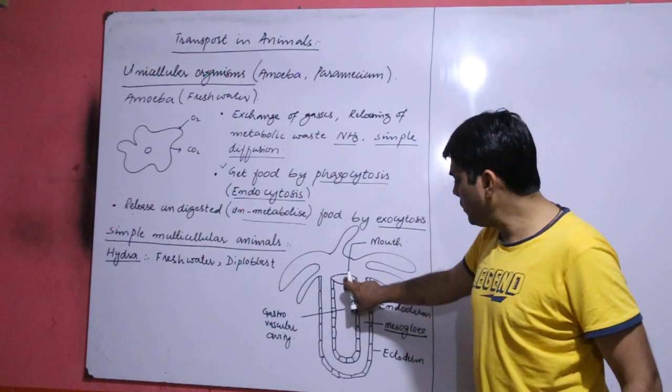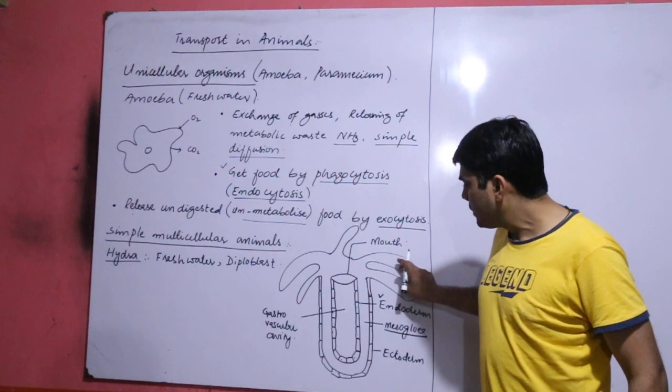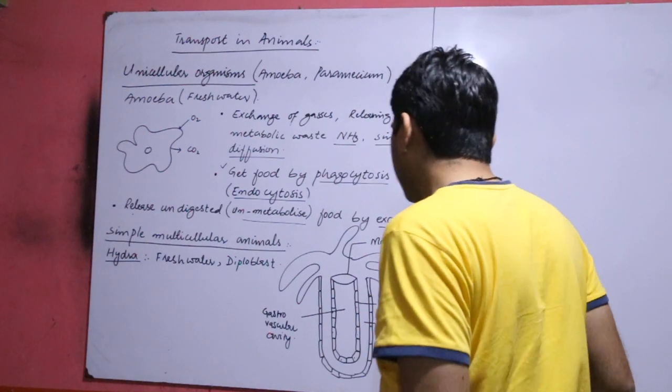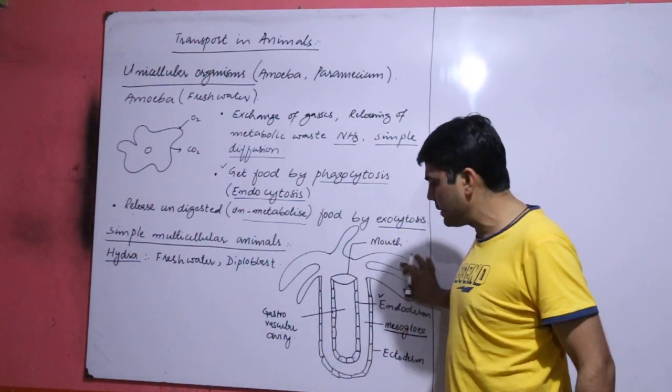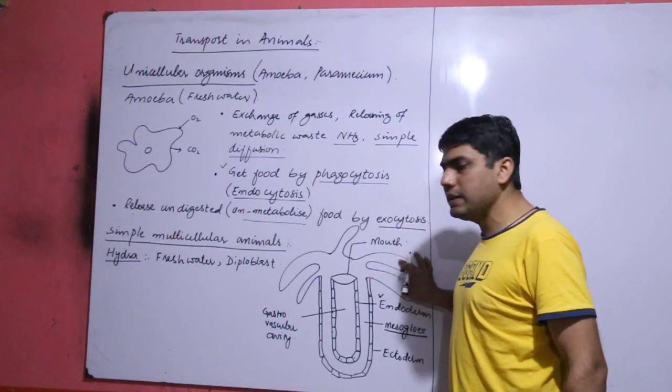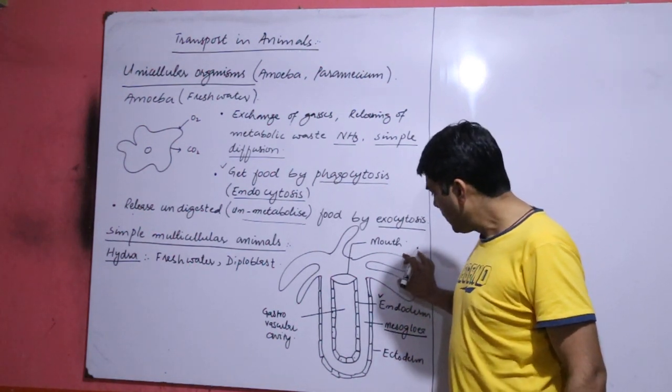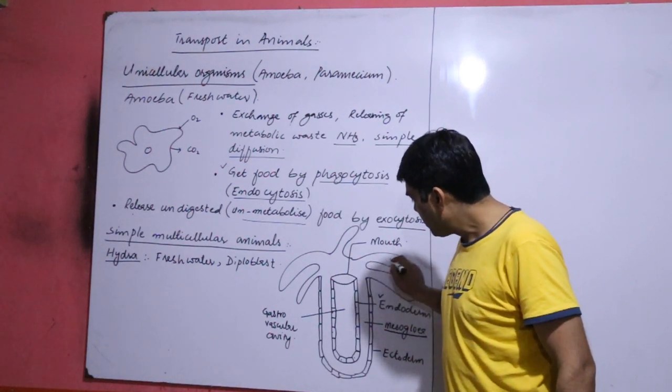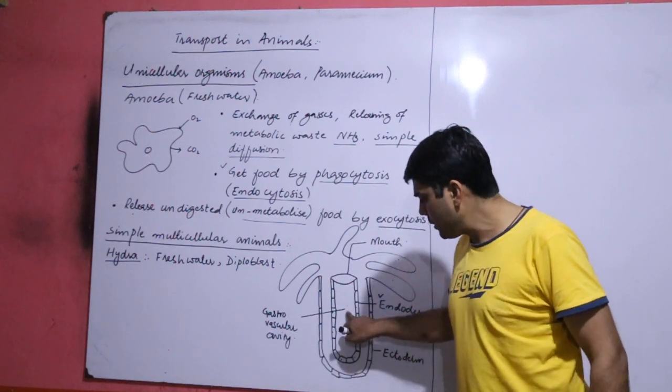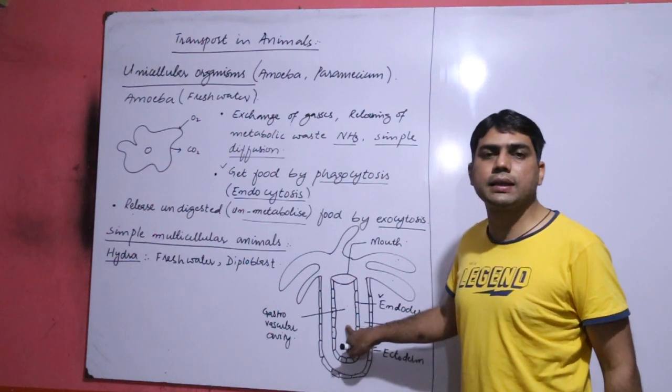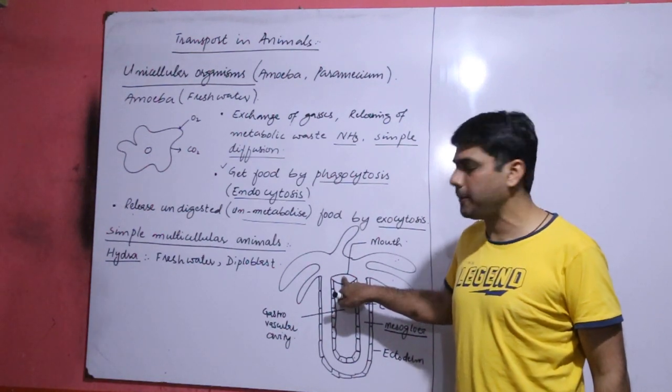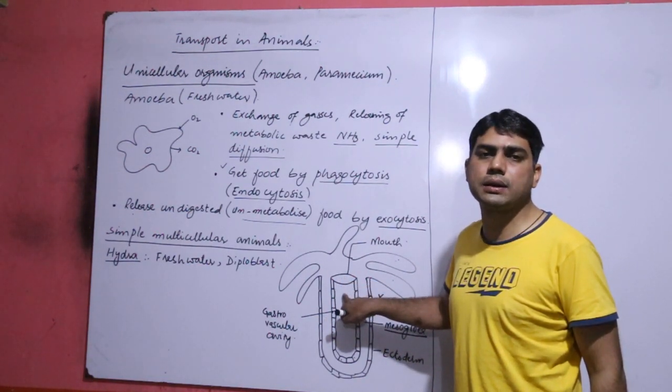And this is the mouth. You have already discussed that the hydra gets their food with the help of tentacles through the mouth and to the body cavity. The hydra has a sac-like digestive system, means it has only a single opening. They get fresh food from the mouth and release undigested waste through the mouth.